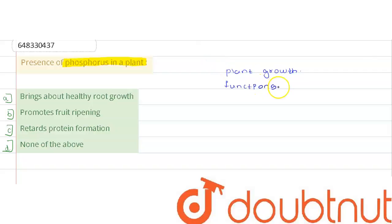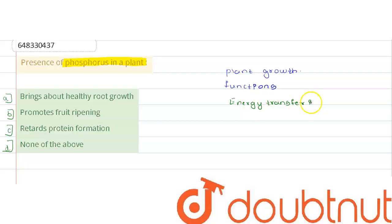These functions include energy transfer — phosphorus helps in energy transfer in plants, as well as the transformation of sugars and starches.